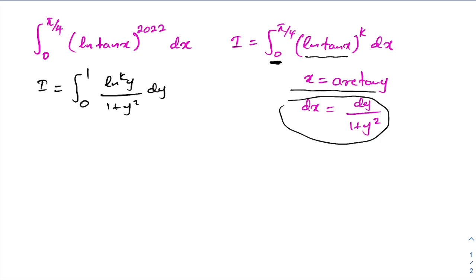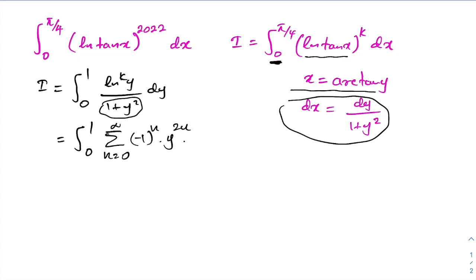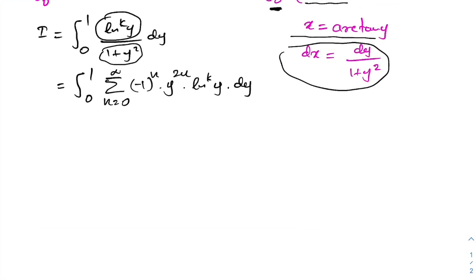As a next step, instead of 1 / (1 + y²) we can use an infinite series, so we can write the integral from 0 to 1 of the infinite sum from n = 0 to infinity of (−1)^n · y^(2n), times the natural log of y raised to the k power, dy.